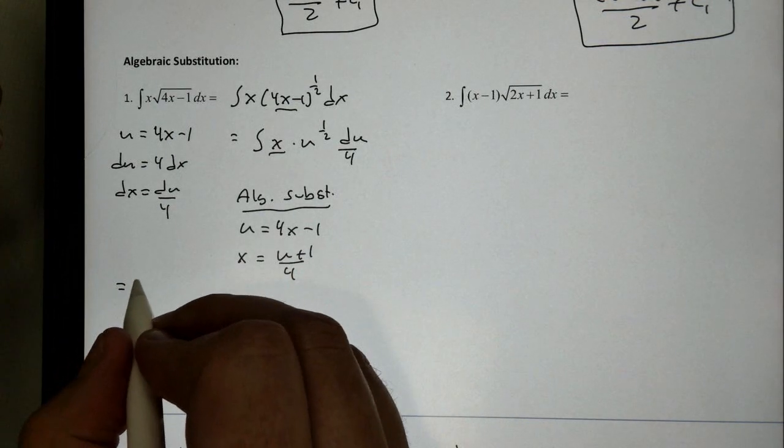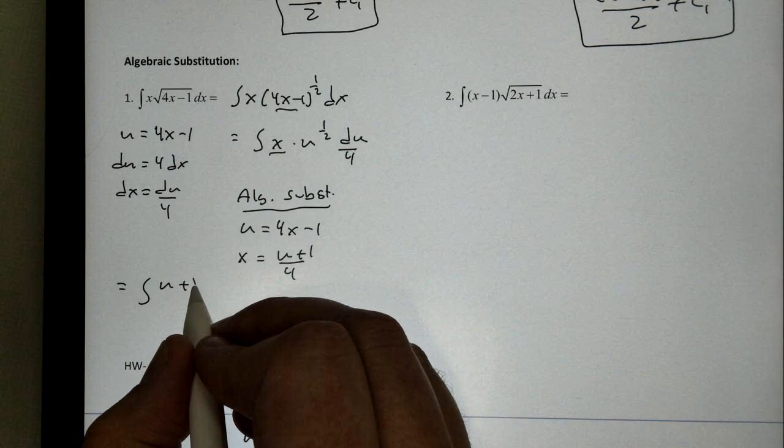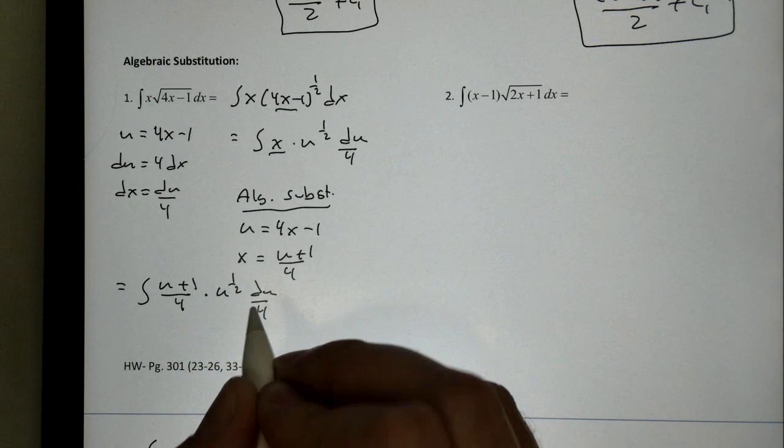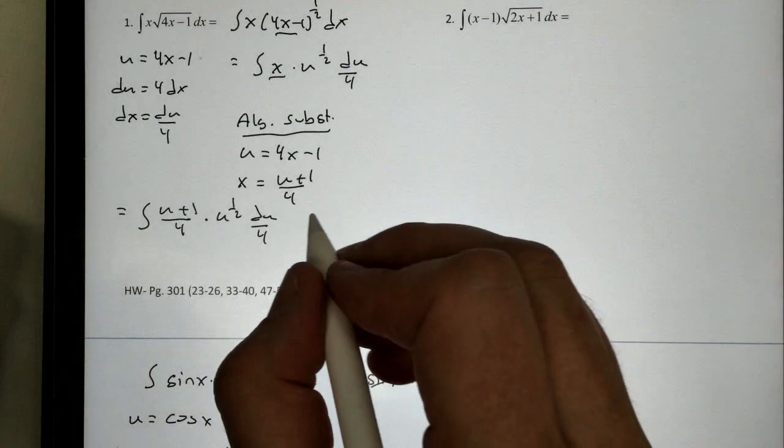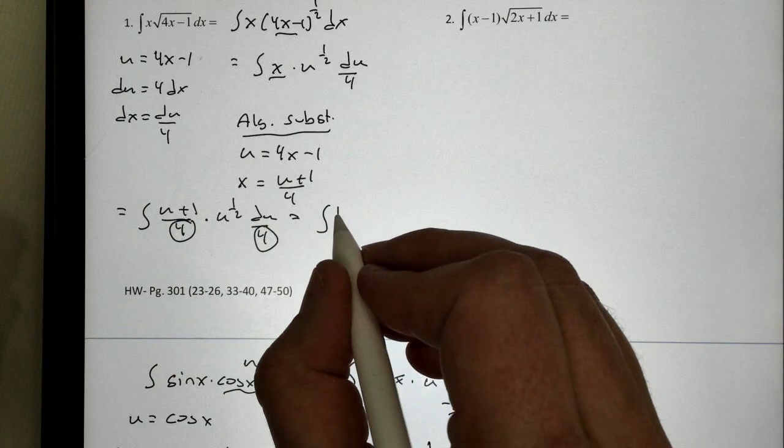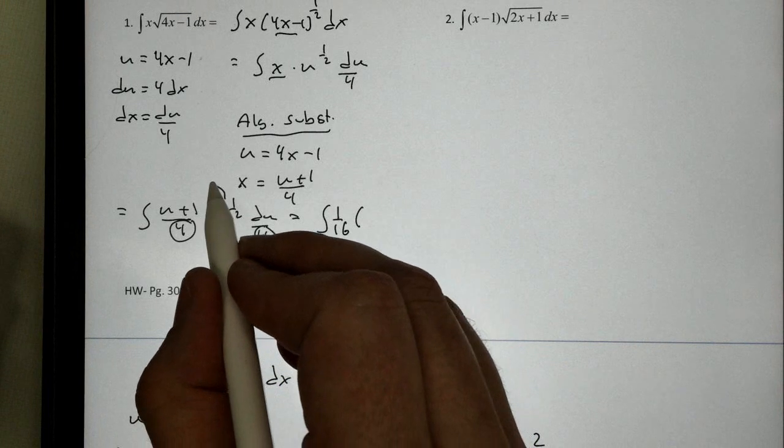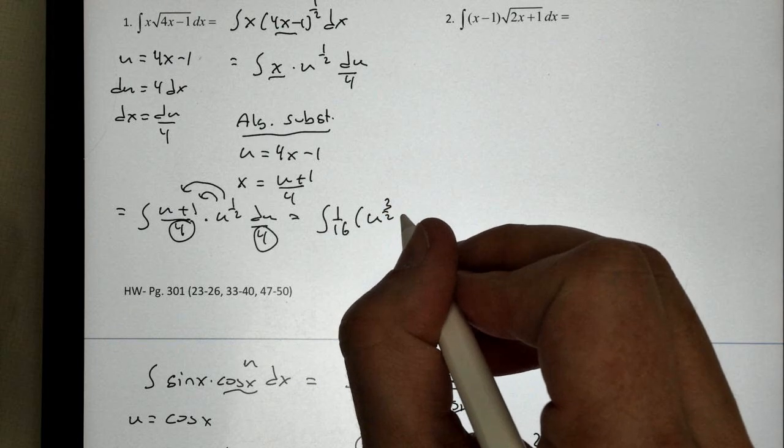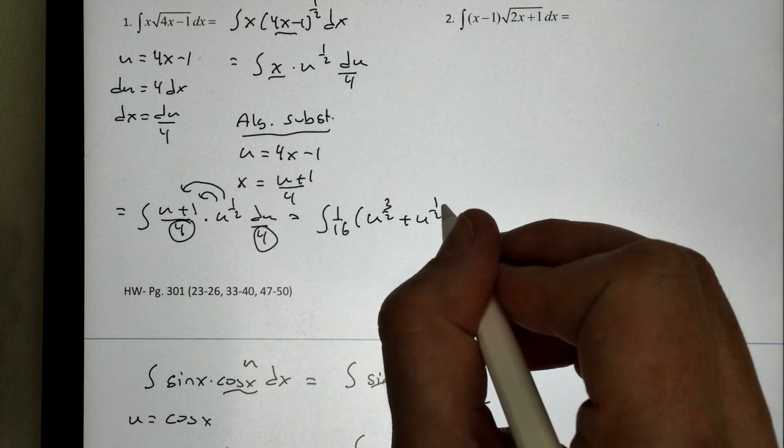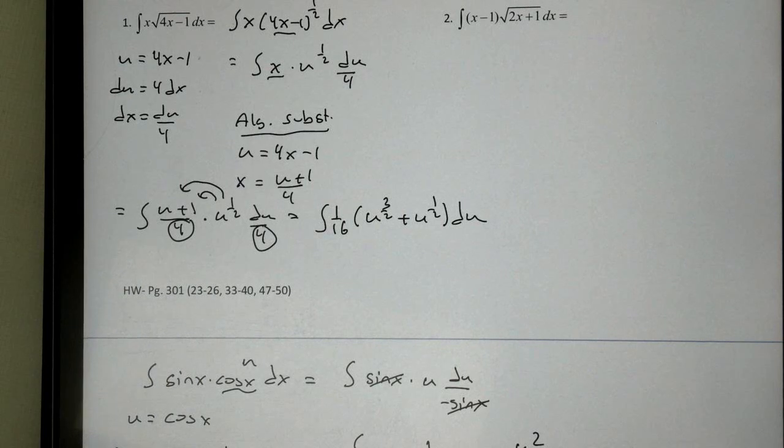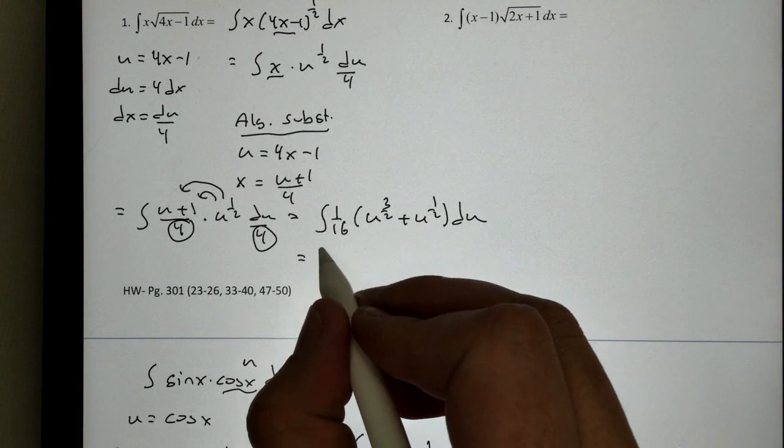So, my new antiderivative, it's going to be messy. u plus 1 over 4 times u to the 1 half, du over 4. Oh, that's a mess right there. If I clean this up a little bit, these two 4s become 16. So, 1 over 16. I'm going to distribute this u to the 1 half. So, that's going to give me u to the 3 halves plus u to the 1 half du. Now, I still haven't taken the antiderivative yet. Oh, my gosh. And at this point, I'm thinking, I should have taken basic math.